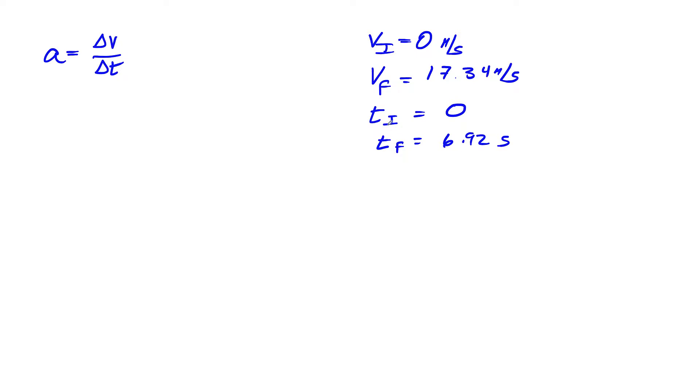So vf minus vi, excuse me, tf minus ti. Since these are zero, change in velocity is going to be 17.34 meters per second, and my change in time is going to be 6.92. Remember, zeroes are going to go away. So our acceleration is equal, we're looking for acceleration, so this is going to be a little bit easy.